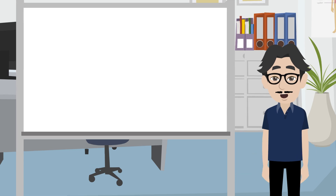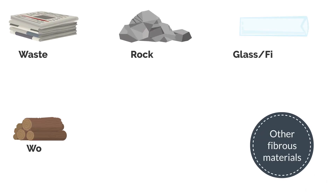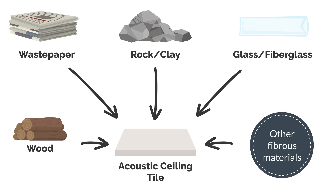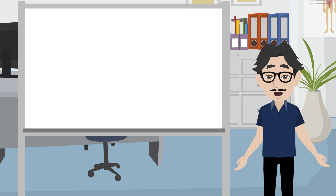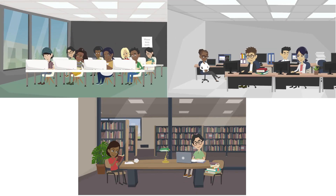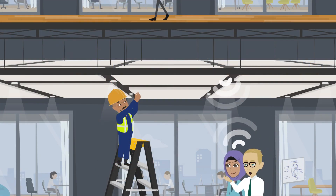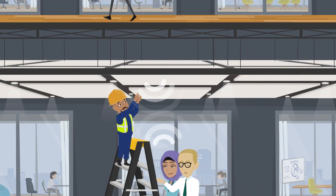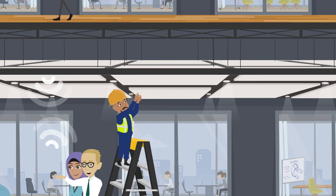Acoustic ceiling tiles are often the preferred ceiling construction because they are made from fiber materials that are formed into tiles, and these materials are much more absorptive to sound. This can be especially useful in quiet rooms such as classrooms, offices, or libraries. A major drawback to gypsum board ceilings is that they are highly acoustically reflective and have less accessibility to the ceiling plenum.